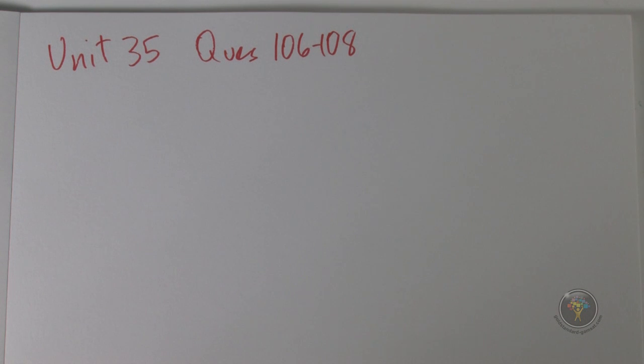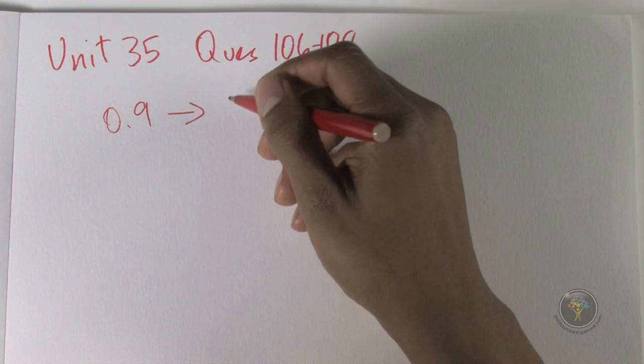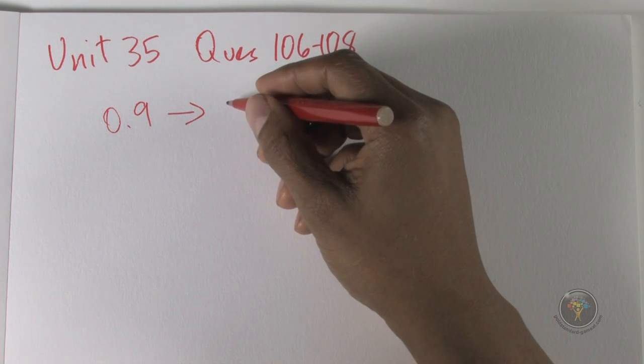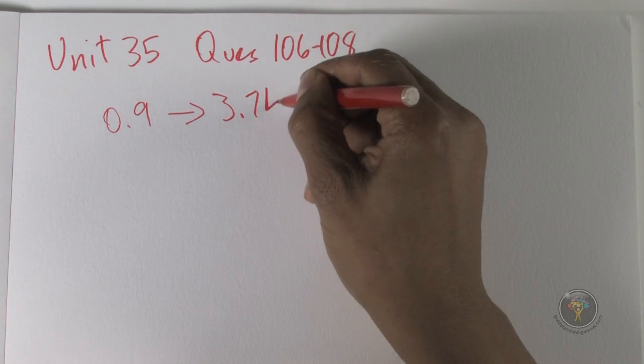Then the rate of diffusion of neon is about what? The easy way to do this is to notice the difference between the densities of neon and krypton. Going from 0.9 to krypton which is 3.74, you can see that it's about four times.